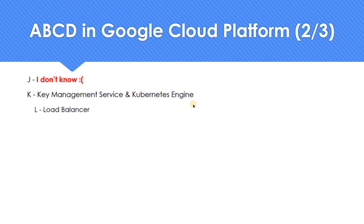L for Load Balancer. We get L7 and L4 load balancers in GCP. M for Memory Store — that's the product, which is basically a managed Redis instance.